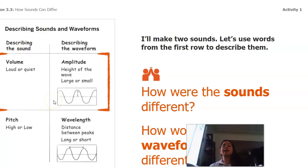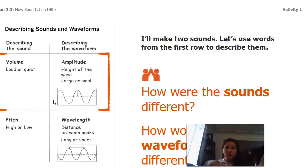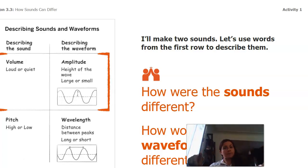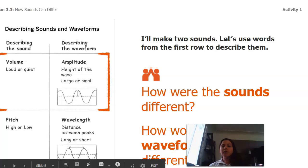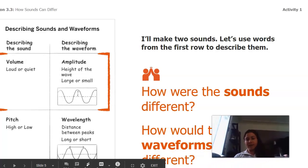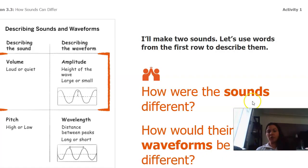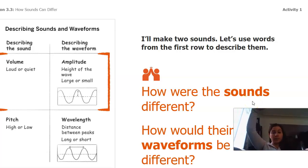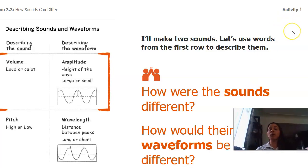When I do that loud clap, the height of that waveform is a lot higher than when I do a quiet clap. Those two sounds are different because their volumes are different, and the waveform is actually different too. The waveform would be taller if the volume was greater, or shorter if the volume was lower.